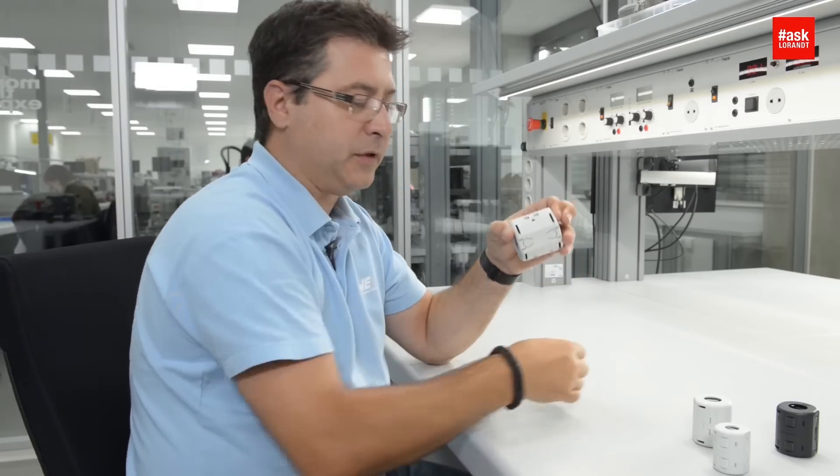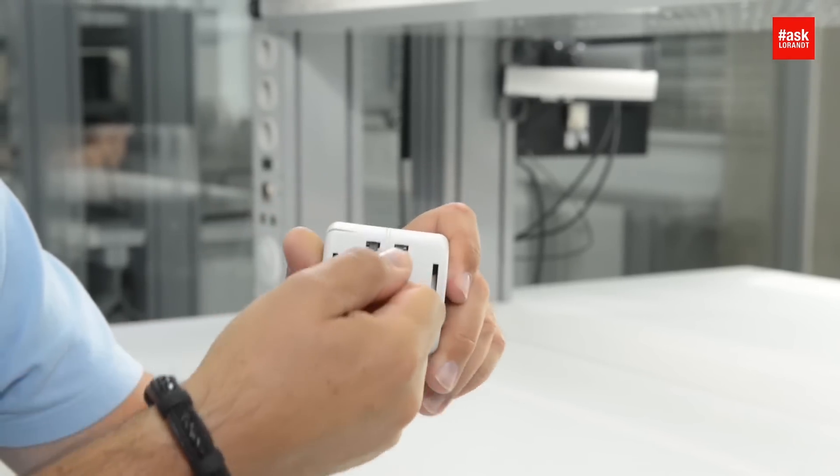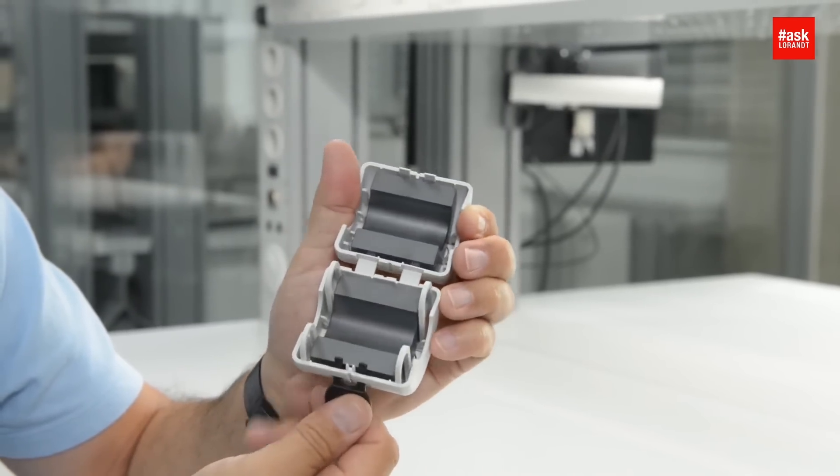So it's very important that you keep the key and the ferrite you hold on the same snap-on ferrite side, and then you introduce the key and it will open by itself.